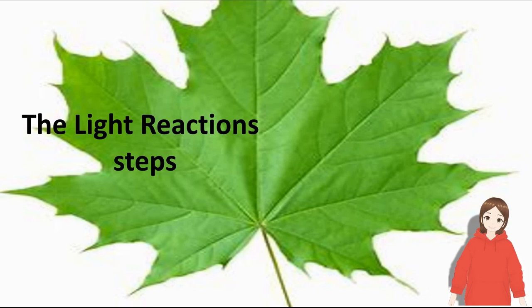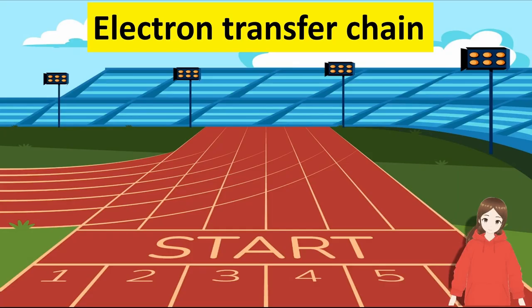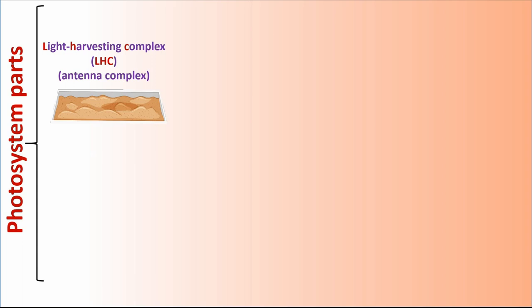Ferredoxin NADP reductase, or FNR, is an enzyme that converts NADP⁺ to NADPH. And ATP synthase is a large protein complex that generates ATP energy. The light reactions steps are the electron transfer chain and chemiosmosis.